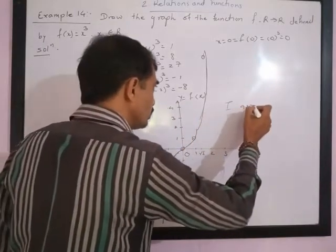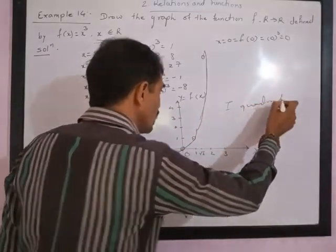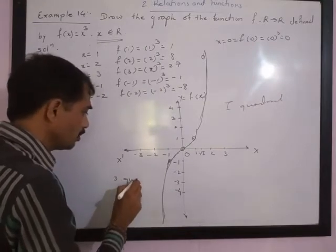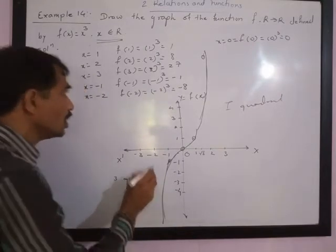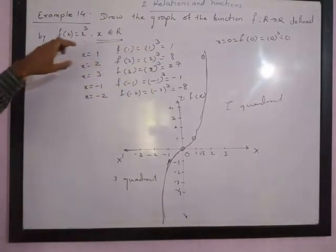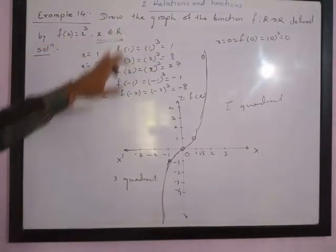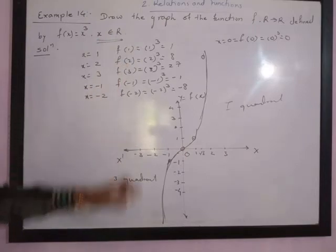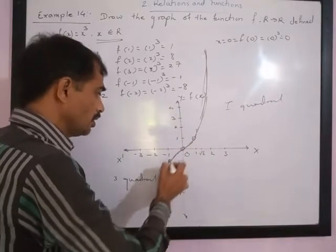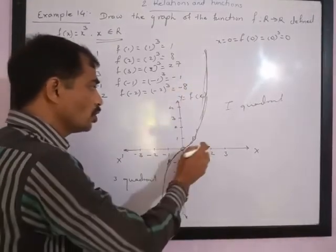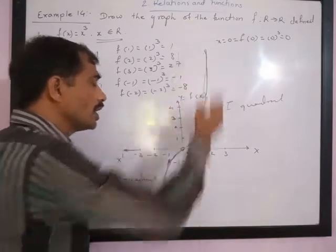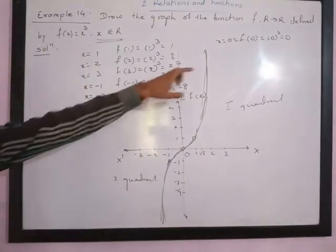This is the first quadrant. You will understand that the domain is the real numbers and the range is also the real numbers. The graph appears in the first quadrant and the third quadrant. For x = 2, the value is somewhere at 8 — extend it and you will get 8. So the graph is something like this.